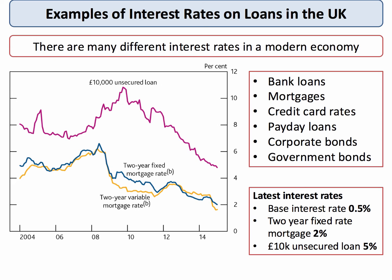The current base rate is 0.5 percent, and typically a two-year variable rate mortgage is around two to two and a half percent, whereas a ten thousand pound unsecured loan will cost you around five percent. Clearly, since 2009 there has been a significant general fall in interest rates in the UK economy, as this chart shows.